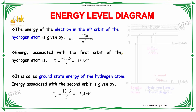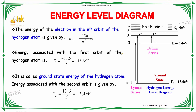Now, we will talk about the energy level diagram. The energy of the electron in the nth orbit of the hydrogen atom is En is equal to minus 13.6 divided by n squared eV.